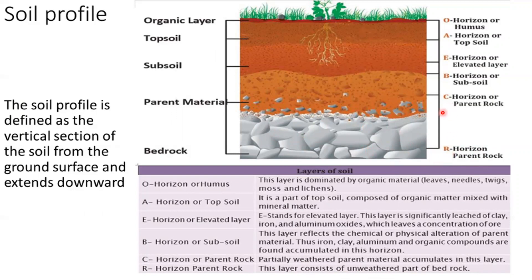Above the R horizon we have the C horizon, which contains the partially weathered parent material that accumulates in this layer. Next, we have the B horizon, also called subsoil. This layer reflects the chemical or physical alteration of the parent material. Iron, clay, aluminum and organic compounds are found accumulated in this horizon.